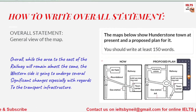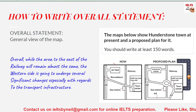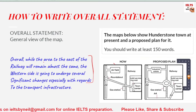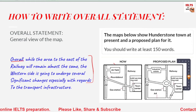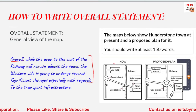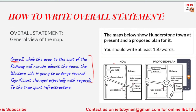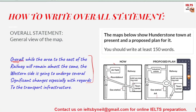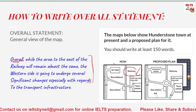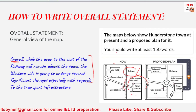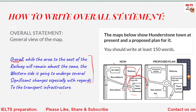Coming to the overall statement — we have to see what the general changes are, or we can locate specific changes. For this one, you have to use a signalling word like 'overall' or 'at first glance of the map.' For example: 'Overall, it is clear that while the area to the east of the railway will remain almost the same' — so this area on the east side of the railway will remain the same.